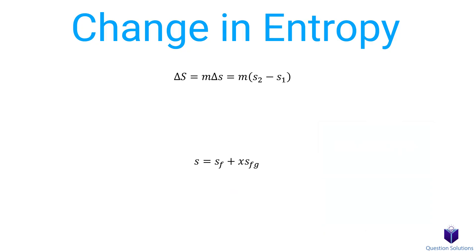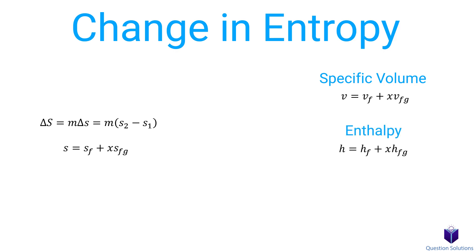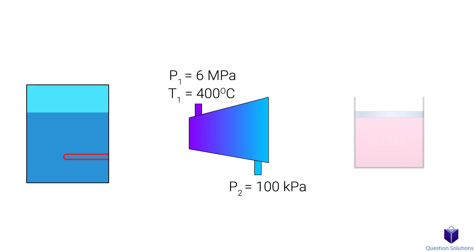To solve problems involving pure substances, you must remember these old equations. This one was for specific volume, this one for enthalpy, and this one for internal energy. Notice the similarity of the entropy equation to these ones. So keep in mind, entropy is just another property. The best way to understand how to use these equations is to go through some examples, so let's get to it.